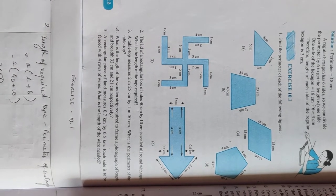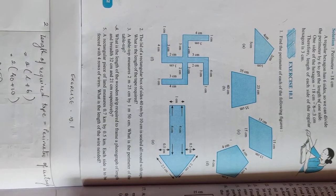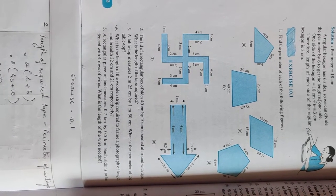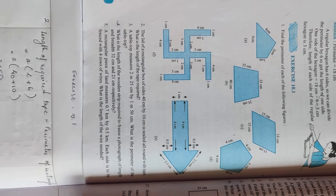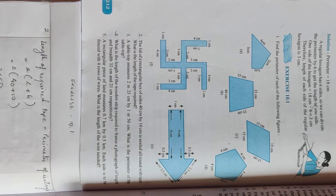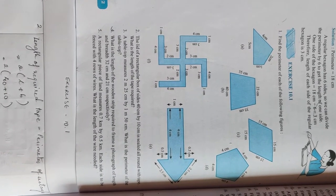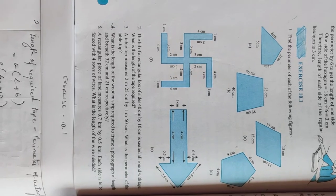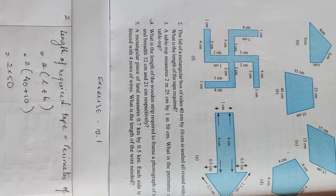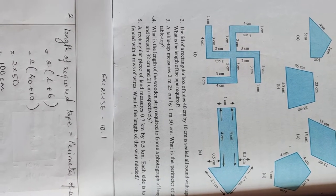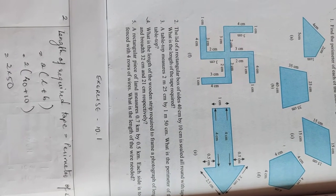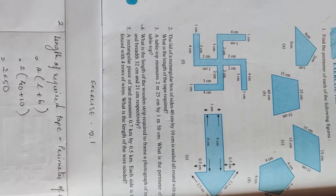Today we're going to continue exercise 10.1 from question number two. At the previous class we already discussed the perimeter formula for a rectangle and triangle. The question is: the lid of a rectangular box of sides 40 centimeters by 10 centimeters is sealed all around with tape. What is the length of the tape required?